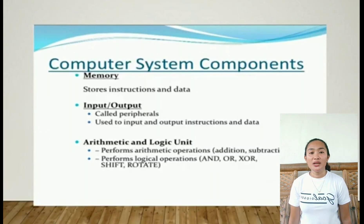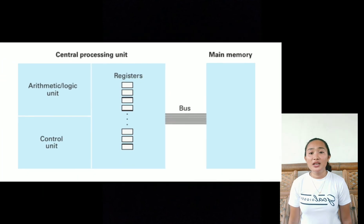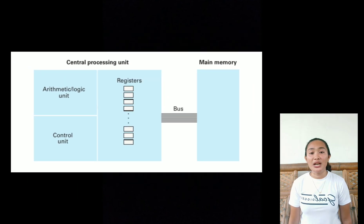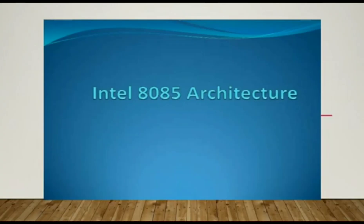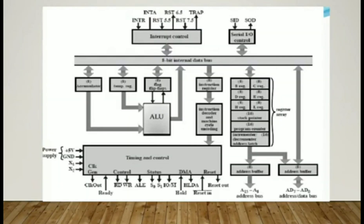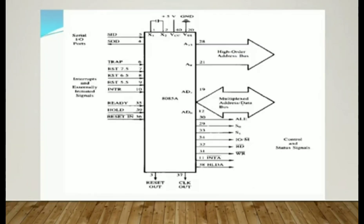Arithmetic logic unit: This part of the CPU performs arithmetic operations. Further, it can even perform logical functions like the comparison of data.